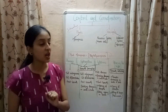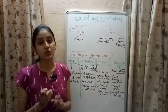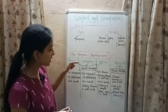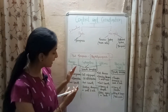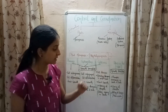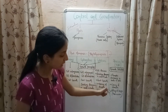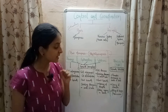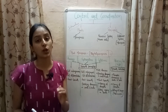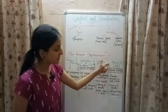Abscisic acid is the growth inhibitor in plants. It promotes dormancy in seeds and buds — the opposite of gibberellins and cytokinins. Besides promoting dormancy, abscisic acid also helps in the closing of stomata and is responsible for the falling of leaves, a process known as abscission — which is why this hormone is called abscisic acid.